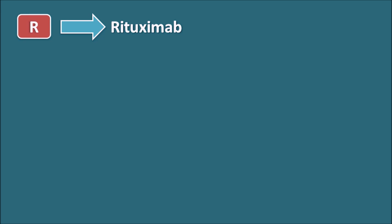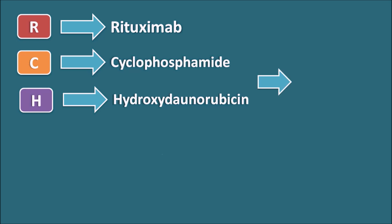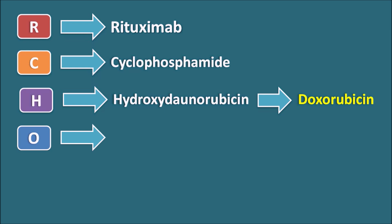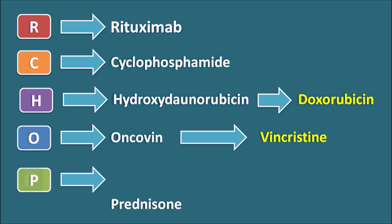What is the R-CHOP regimen? R indicates rituximab, a monoclonal antibody that antagonizes CD20 cells. C is cyclophosphamide, an alkylating agent. H is hydroxydaunorubicin, also called doxorubicin — an anthracycline antibiotic that acts by damaging DNA. O is oncovin, which is vincristine, which inhibits mitotic division of cells. P is prednisone, a glucocorticoid acting as an anti-cancer agent.